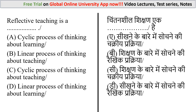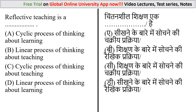The next question: reflective teaching is — the options are: (a) cyclic process of thinking about learning, (b) a linear process, (c) cyclic process of thinking about teaching, and (d) linear process of thinking about learning. Reflective teaching means looking at what you do in the classroom, thinking about why you do it, and thinking about whether it works. It is a cyclical process because once you implement changes, the reflective and evaluative cycle begins again. The correct answer is option C: reflective teaching is a cyclic process of thinking about teaching.